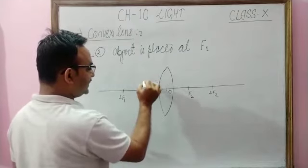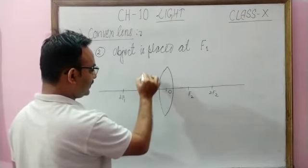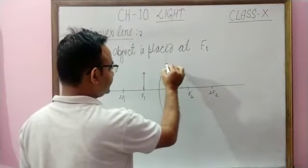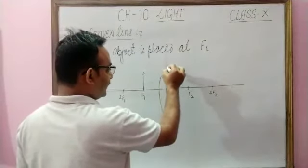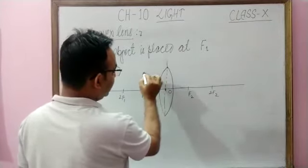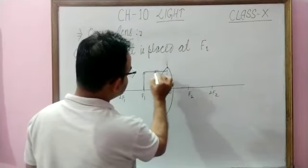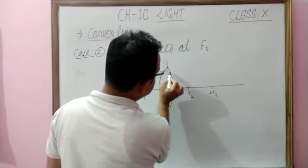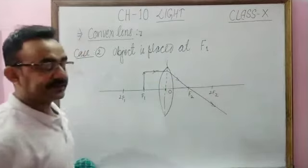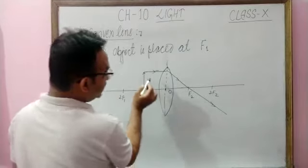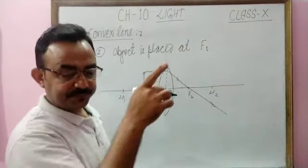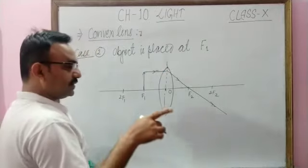The condition is: object is placed at principal focus. Then as per the first rule — a ray parallel to the principal axis, after refraction, passes through the principal focus on the other side.